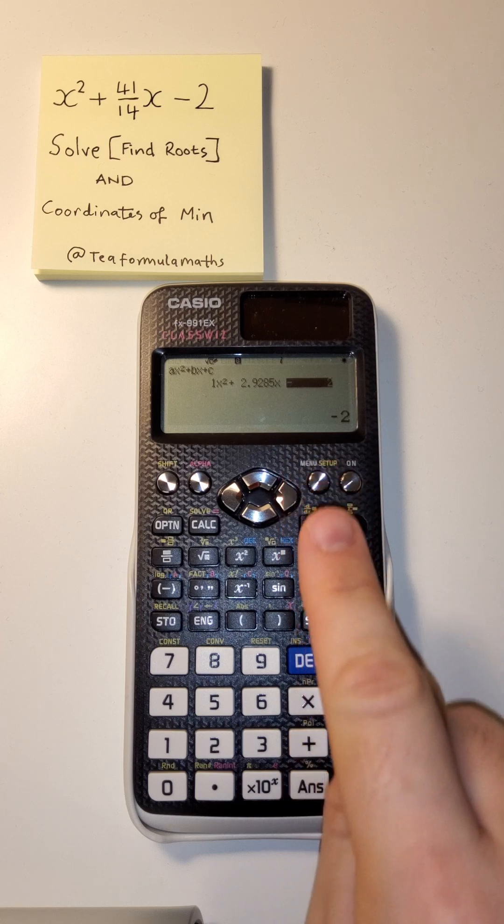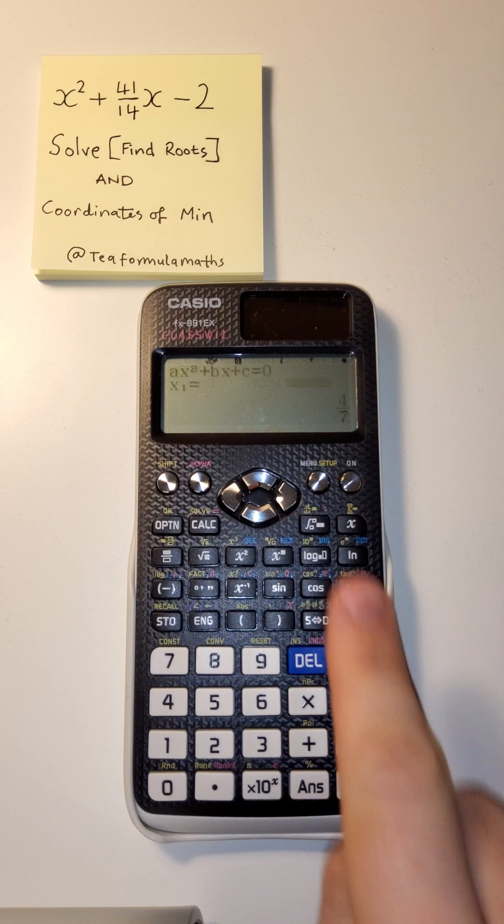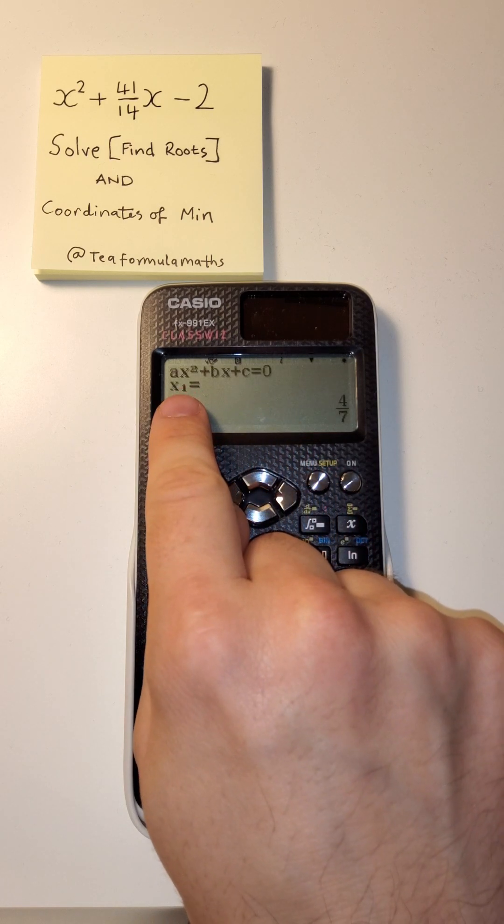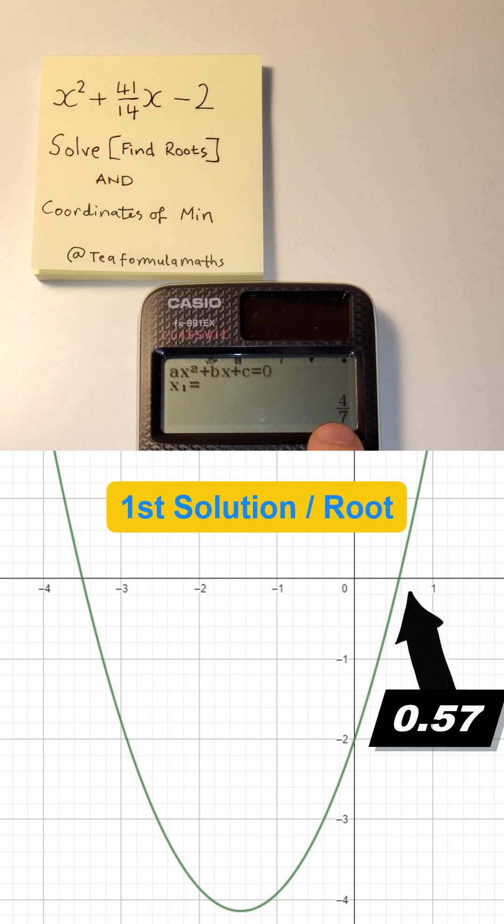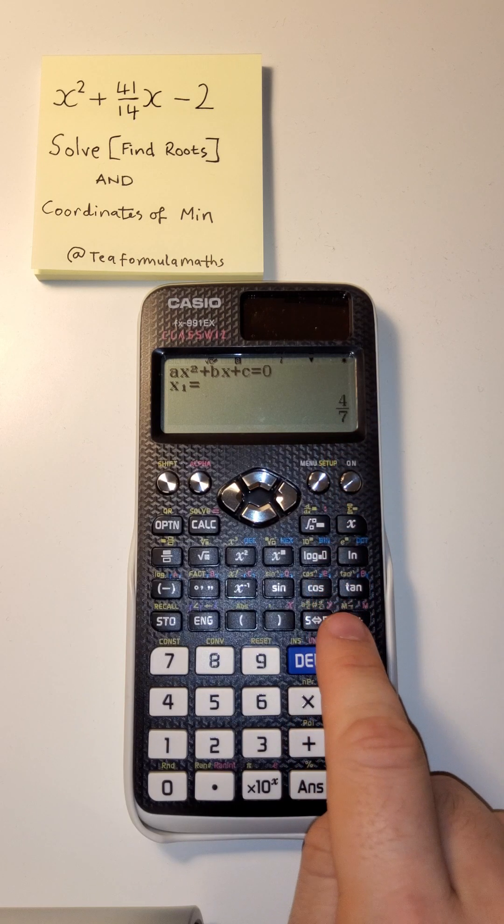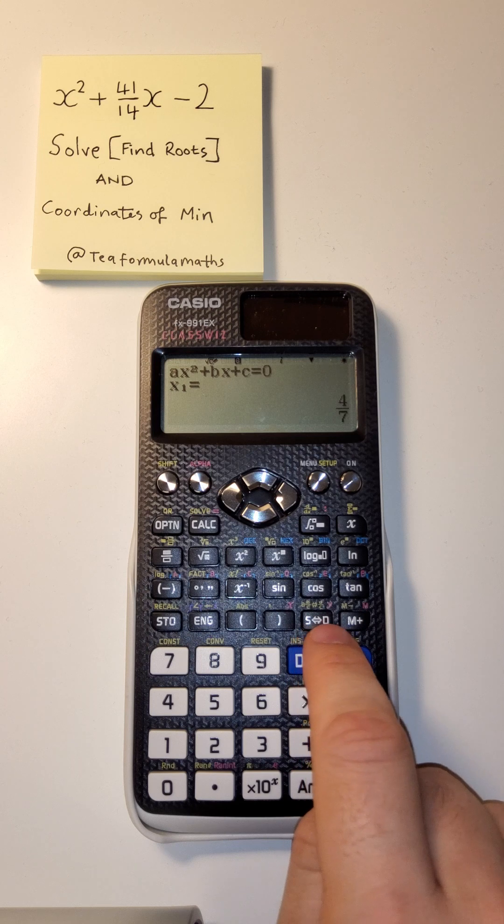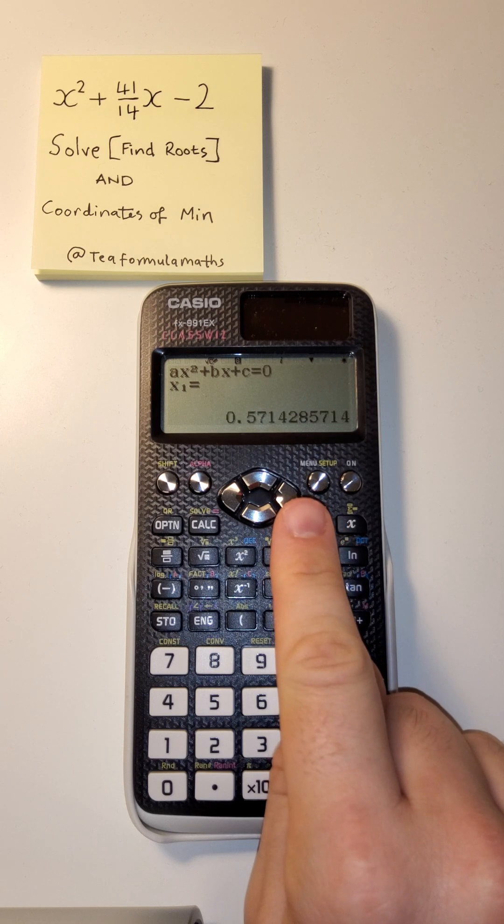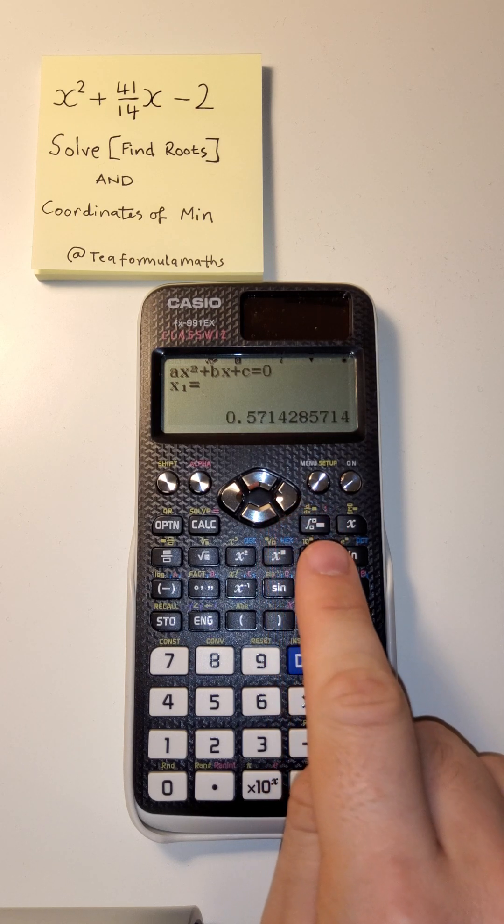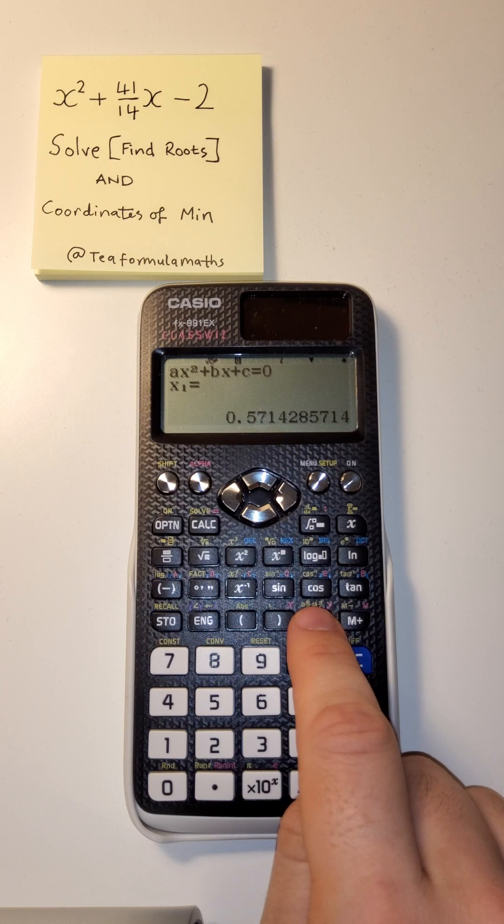When we press equals, we'll get three things. We get x1—this is the first root. You decide which one it is. If you draw a sketch, you could probably figure out. Four over seven is very useful. If you want to get to sketching, the S to D button here will change it to a decimal. Decimals are a better form for figuring out the magnitude in comparison to other numbers.